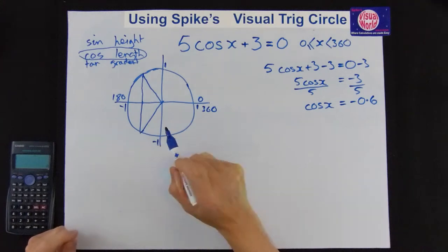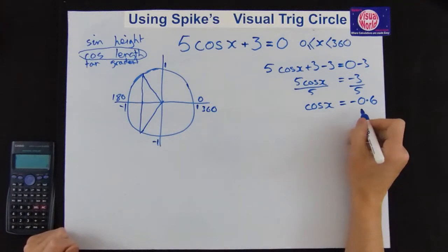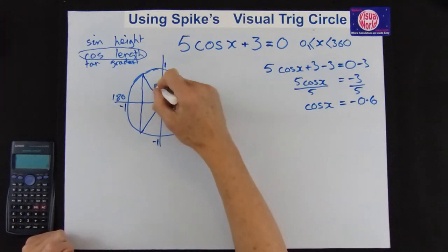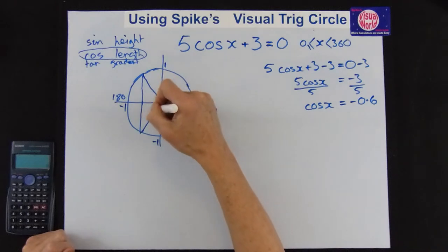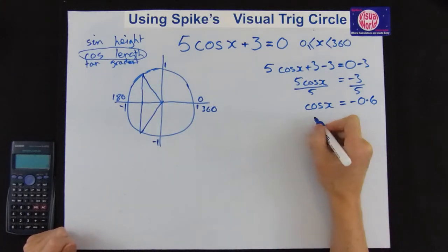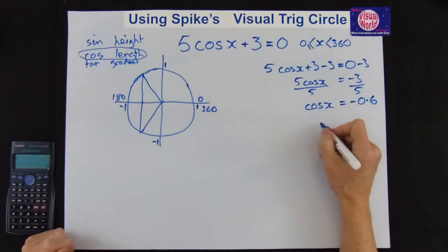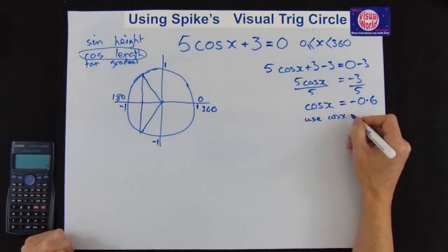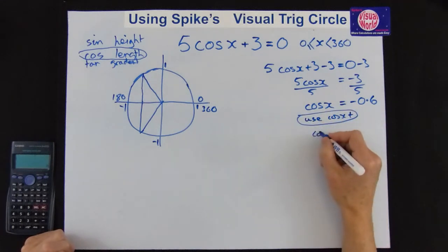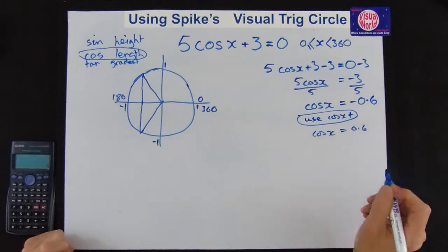And the next thing is to use a calculator. Now don't put in the minus because that gives you the angle where we want the angles in there. So put it in as plus. I'll just write that down just in case you're checking it. So we use cos x plus. So we're going cos x equals 0.6.